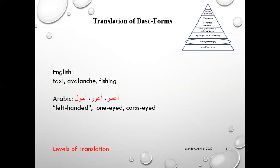In Arabic as well, we have the same process. We may have one word which could be rendered into two in English. 'A'sar' — left-handed. We don't have a single word for 'a'sar' in English, so we have to use two forms. Left-handed; one-eyed for 'awar'; cross-eyed for 'ahwal.' So you can notice that we have to make up the meaning here in two forms.